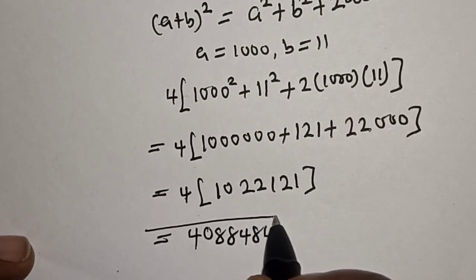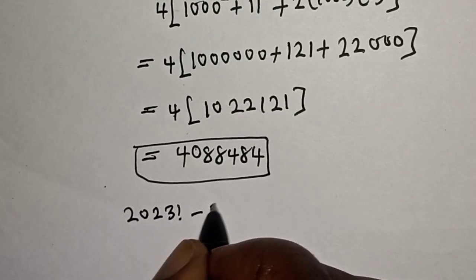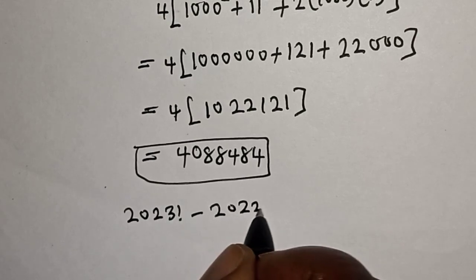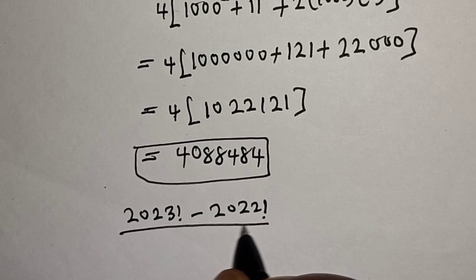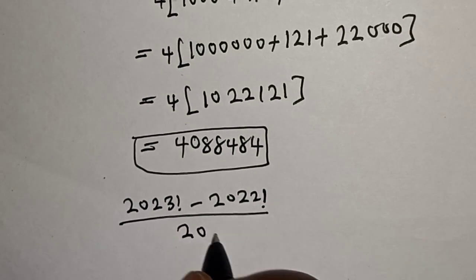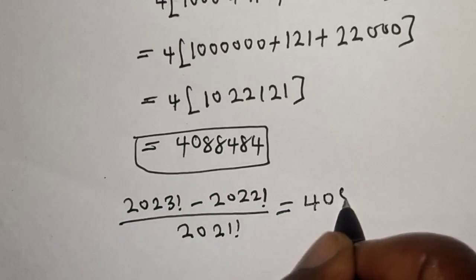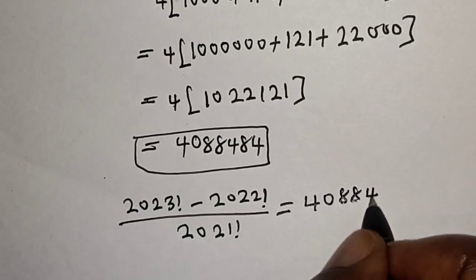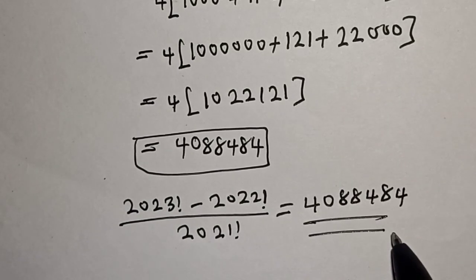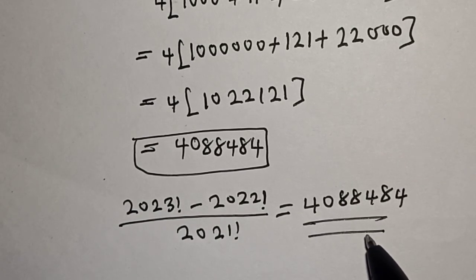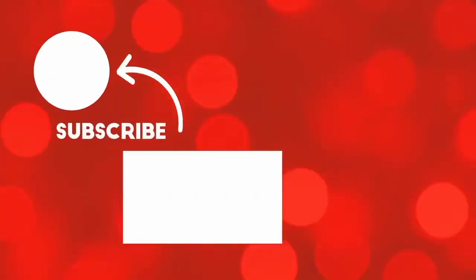Therefore, 2023 factorial minus 2022 factorial divided by 2021 factorial is equal to 4,088,484. That is our final answer. If you enjoyed the class, please don't forget to like, share, comment, and subscribe. Thank you.